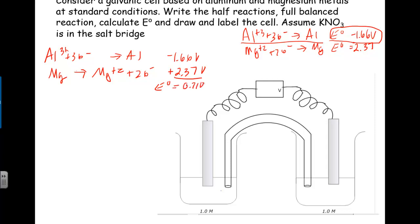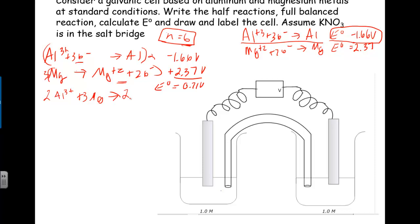Now I need to write the balanced equation. There are 3 electrons gained in the aluminum half-reaction and 2 electrons lost in the magnesium half-reaction, so I multiply the aluminum equation by 2 and the magnesium equation by 3, giving n = 6 electrons total — important to record for the next section. The balanced equation becomes: 2Al³⁺ + 3Mg → 2Al + 3Mg²⁺, with the electrons canceling out.